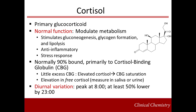Once in circulation, cortisol is mostly bound primarily to cortisol-binding globulin, or CBG, and to a much lesser extent, albumin. Remember that since CBG and albumin concentrations can be affected by synthetic liver functions, estrogens, certain drugs, and liver disease can all affect the amount of binding protein, though this has only a minimal effect on the relative amount of free cortisol.